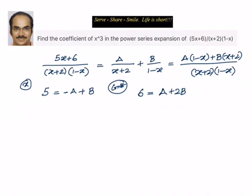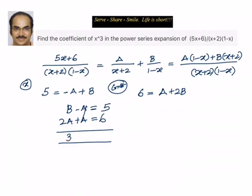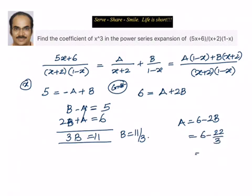Comparing constant terms gives A plus 2B equal to 6. So we have the system: B minus A equals 5 and A plus 2B equals 6. Adding them gives 3B equals 11, so B equals 11 by 3. Then A equals 6 minus 2B equals 6 minus 22 by 3, which equals minus 4 by 3. So A is minus 4 by 3 and B is 11 by 3.